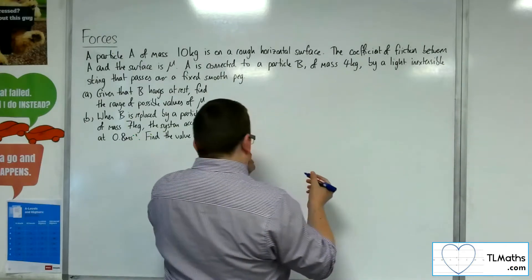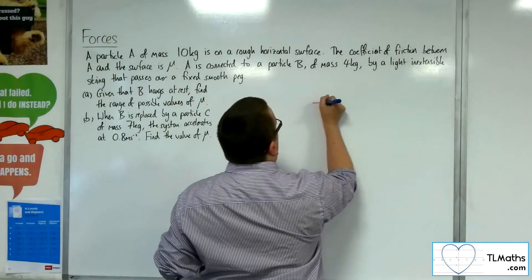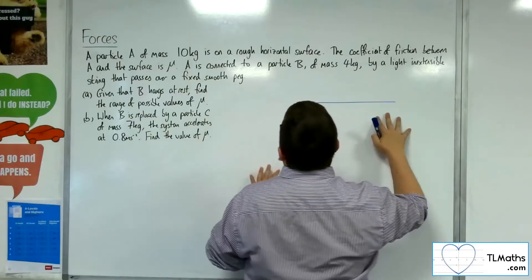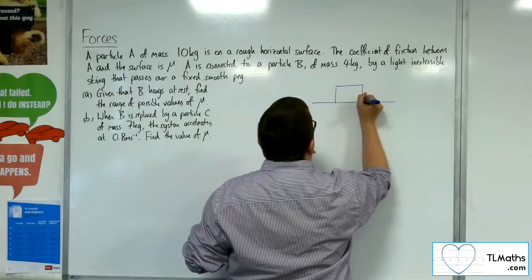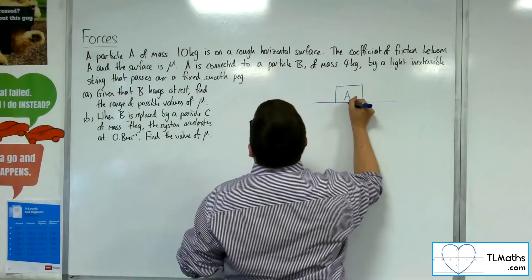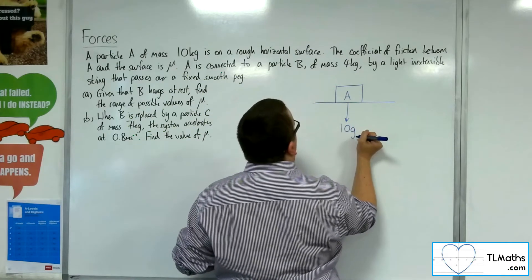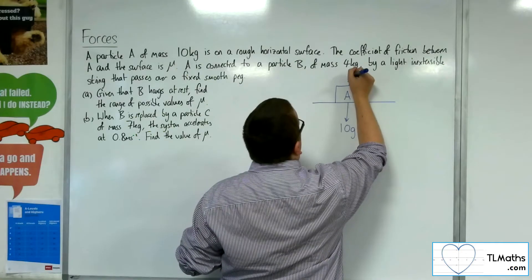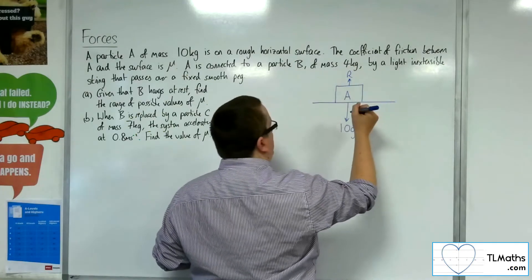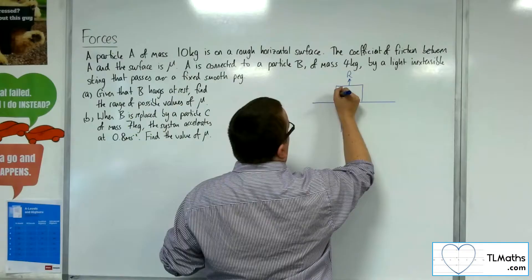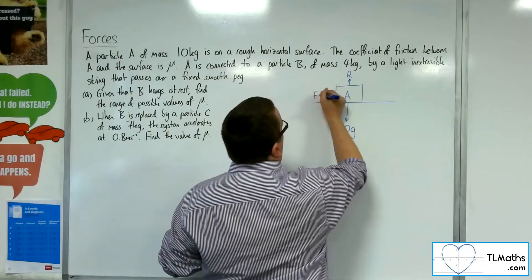So this is the situation that we have. We've got this rough horizontal surface. Particle A sits on that, and it's got a mass of 10 kilos, so a weight of 10g. It will have a normal reaction force of R, and because it's a rough tabletop, it will have a frictional force as well.